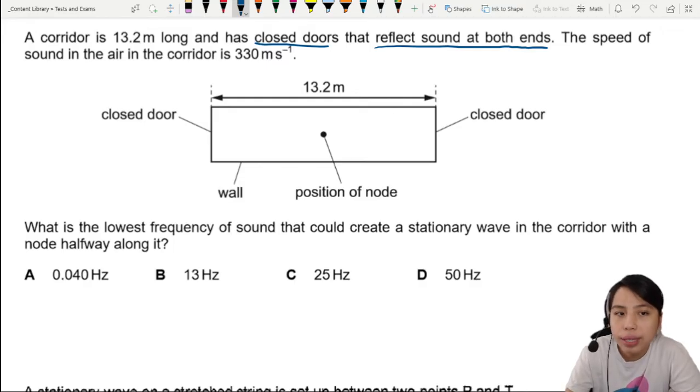That means we're going to treat this corridor as a closed tube. They already wrote closed, which means at the ends there must be nodes.